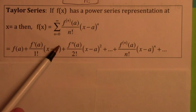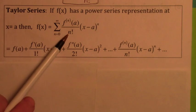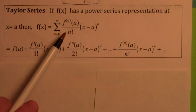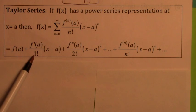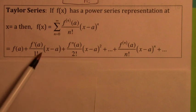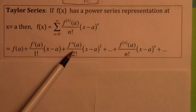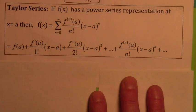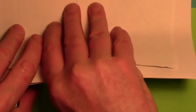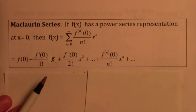And that's where we have this important formula — it's called a Taylor series. If a function has a power series representation at x equal a, then it must be this. The coefficients of the terms are f of a, f prime of a over 1 factorial, f double prime of a over 2 factorial, and so on. That would be the power series at x equal a, a special type of power series that we're going to use a lot.